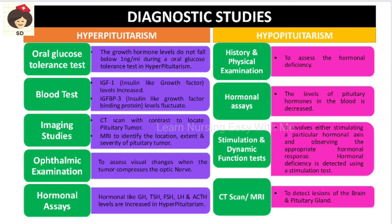Coming to diagnostic studies: in hyperpituitarism, an oral glucose tolerance test is performed. When we check growth hormone levels in the blood, they will not fall below 1 nanogram per mL — if it does not go below 1 ng/mL, it is positive for hyperpituitarism. In blood tests, plasma levels of insulin-like growth factor (IGF) will be increased, and insulin-like growth factor binding protein levels may fluctuate. CT scan and MRI are done to assess tumor size and severity.